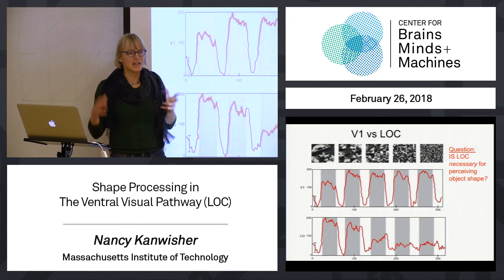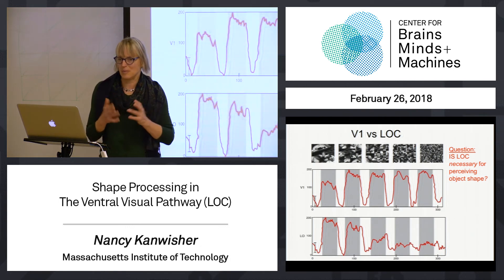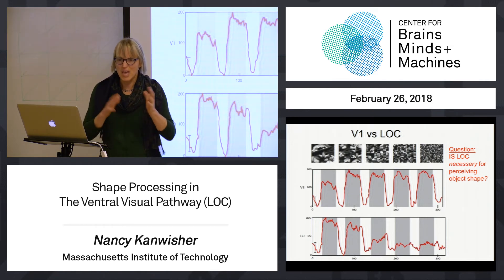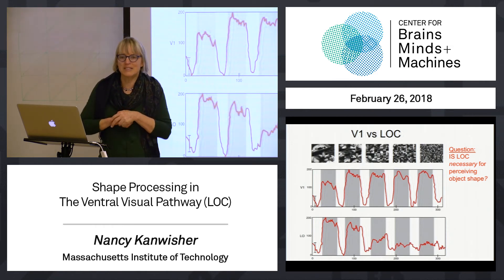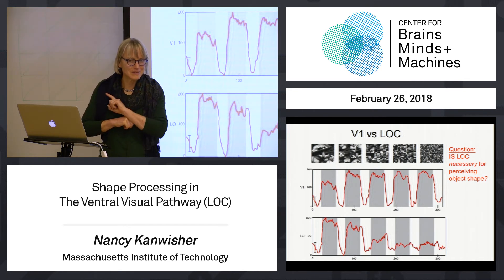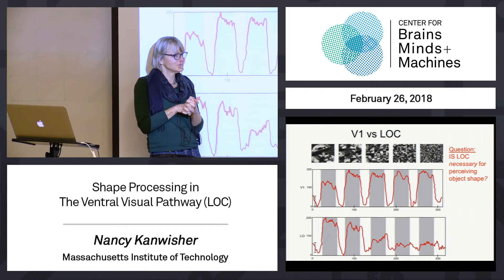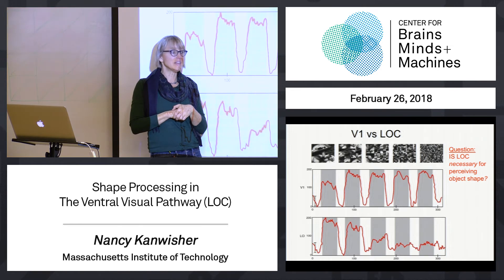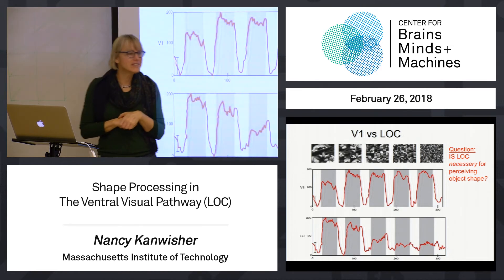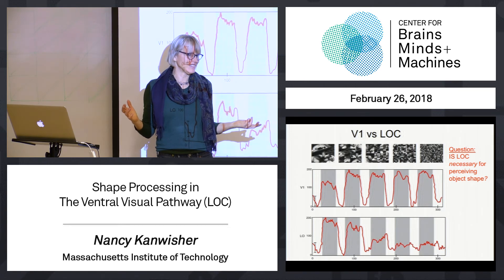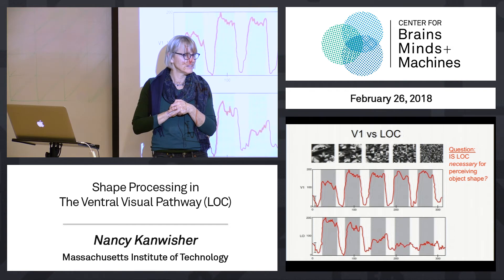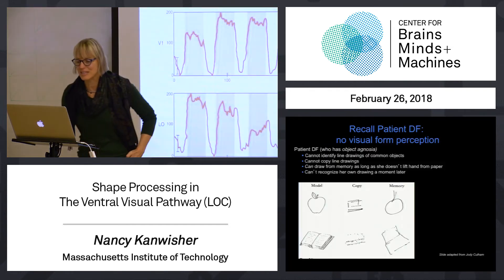All of this suggests that LO is doing some kind of mid-level shape representation — we don't know exactly what, whether it's 2D or 3D, but something more complex than just responding to edges. Does this tell us that LO is necessary for shape perception? We've already seen data in this lecture about Patient DF, who has a shape processing deficit — and her damage is in that ventral pathway we're talking about.